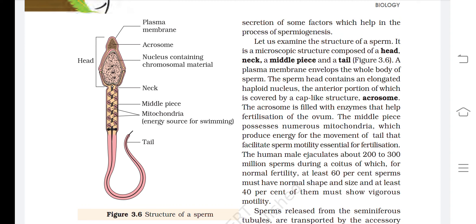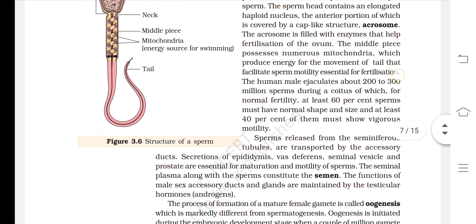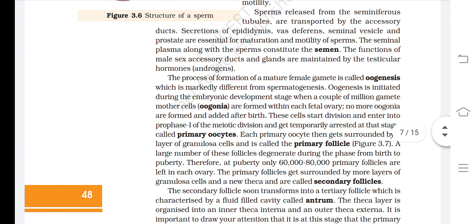Sperms released from the seminiferous tubules are transported by the accessory ducts. Secretions of the epididymis, vas deferens, seminal vesicle, and prostate are essential for maturation and motility of the sperms. The seminal plasma along with sperms constitutes semen. The functions of the male accessory ducts and glands are maintained by testicular hormones — androgens.